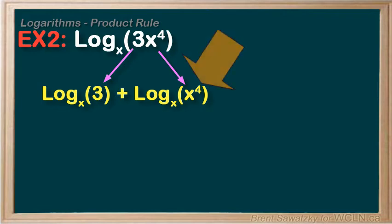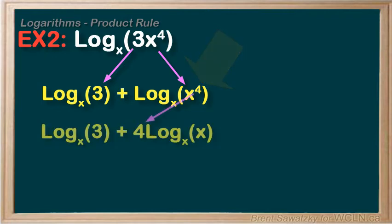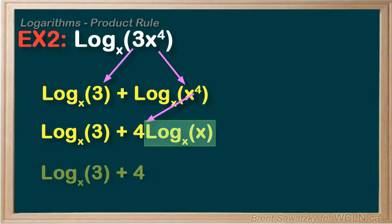Now we see the exponent here and we remember back to our power rule. We could rewrite this as log base x of 3 plus 4 log base x of x. At this point we're starting to remember that log base x of x will just equal 1. So we could simplify this down to log base x of 3 plus 4.